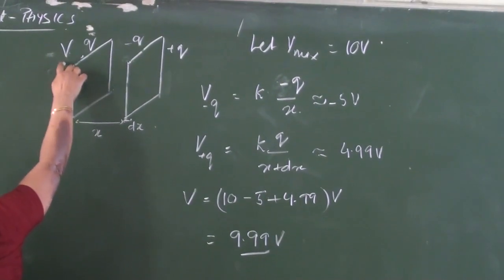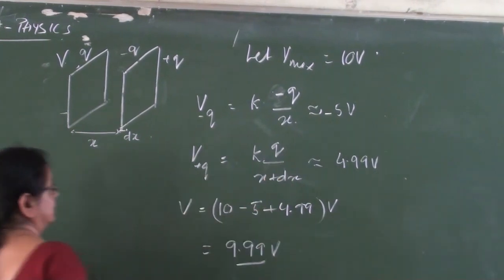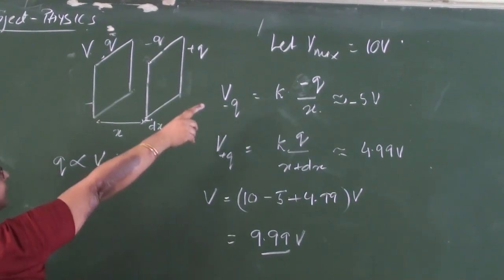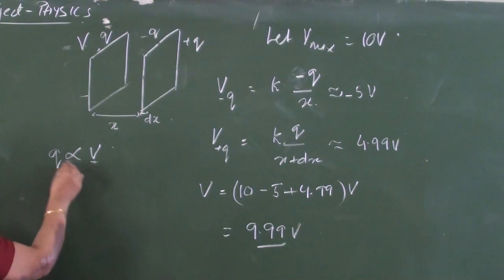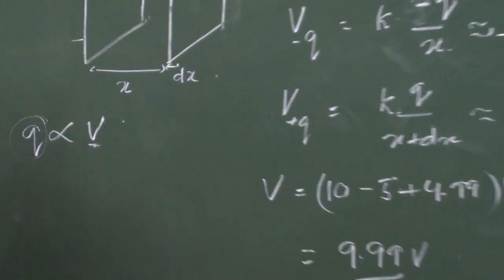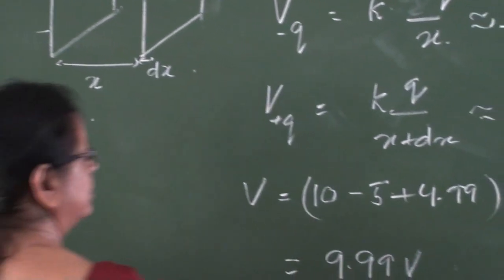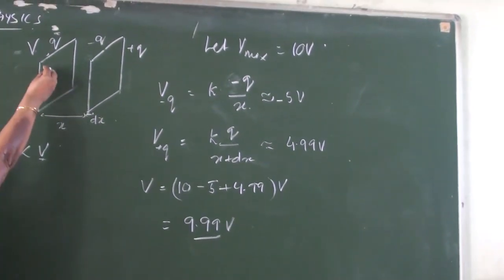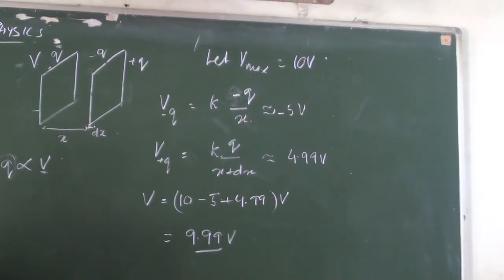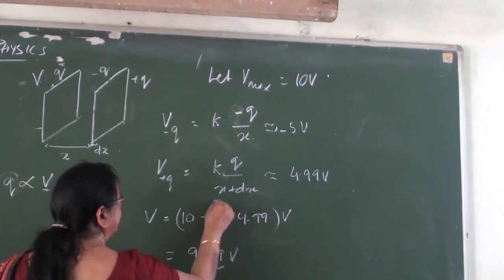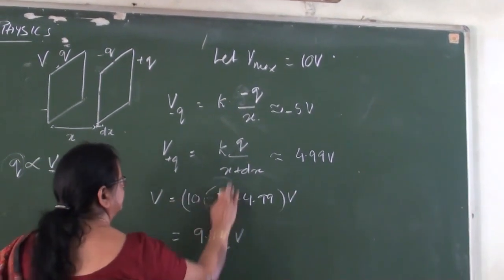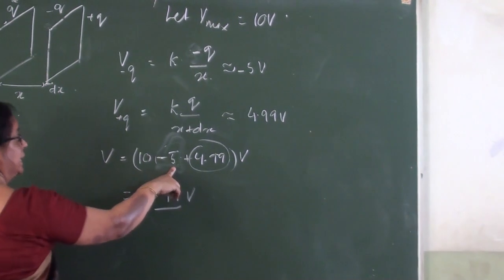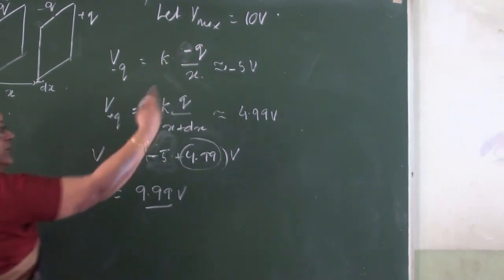We know the maximum potential of this conductor is 10 volt, and Q is proportional to V. So naturally, to increase the potential back to its maximum value of 10, we can give more charge so that the potential is raised. But to increase the potential from 9.99 to 10, only a very small amount of charge can be given, so the storing capacity increases by a very little amount. However, if somehow we can make the positive induced charge zero, then naturally the potential will be reduced to about 5 volt. And to raise it back from 5 to 10, we can give an enormous amount of charge.